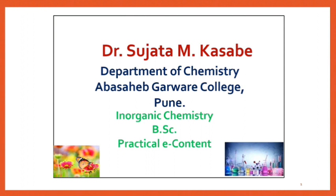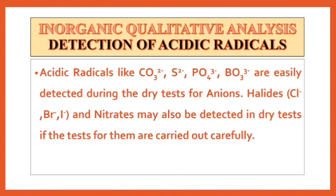Let us see the detection of acidic radicals. Acidic radicals like CO3²⁻, S²⁻, PO4³⁻, BO3³⁻ are easily detected during the dry tests for anions. Halides and nitrates may also be detected in dry tests if the tests for them are carried out carefully.